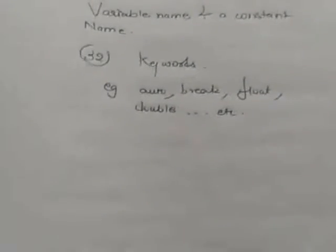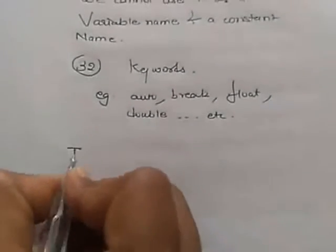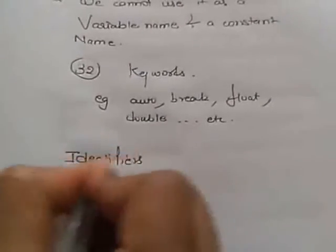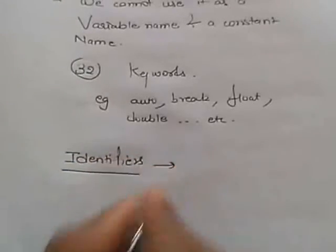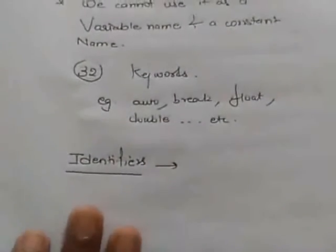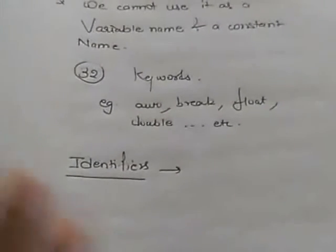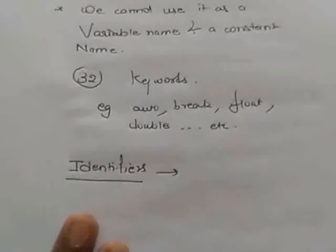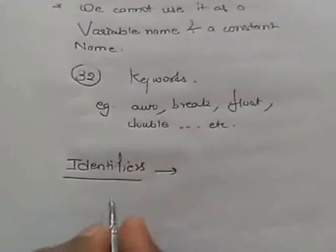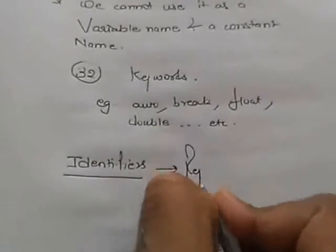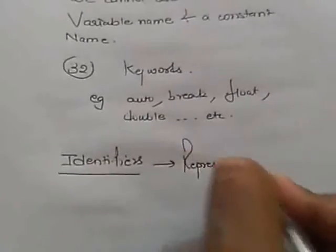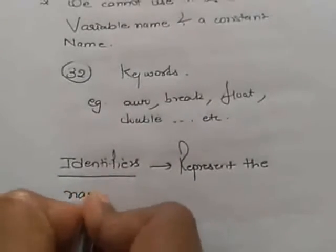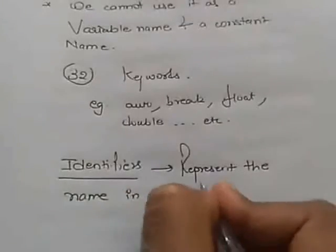As the name suggests, identifiers means to identify, to find out or to represent. So, identifiers represent the name in a C program.